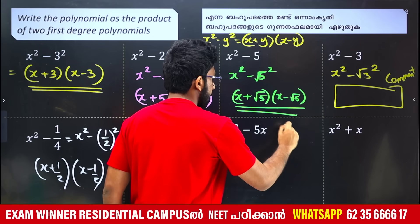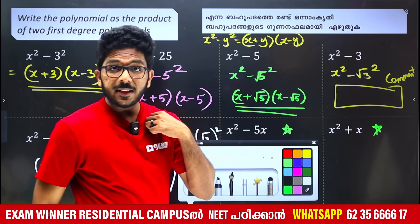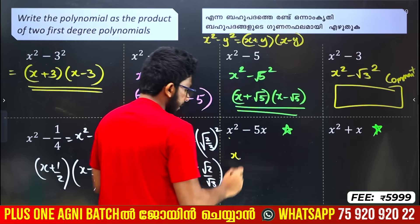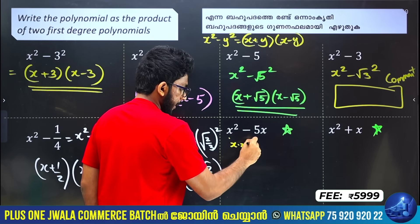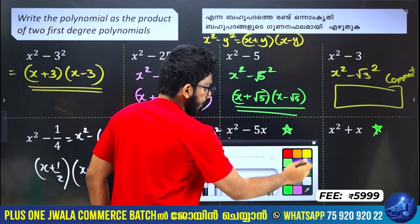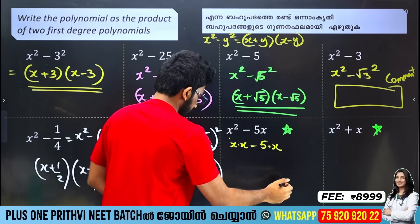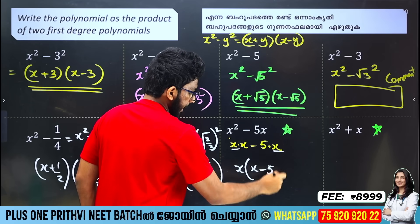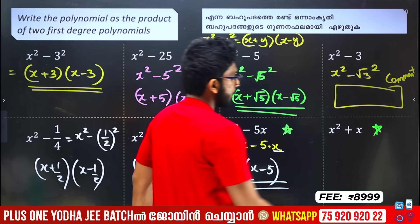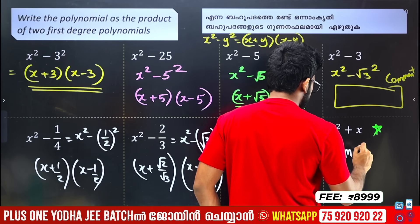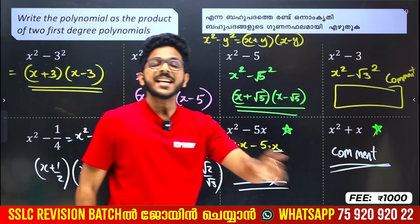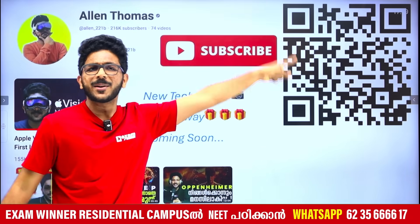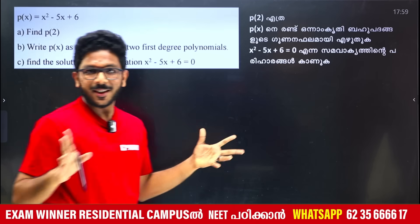These two questions are very important — you can't skip them. In a second degree polynomial, we have two first-degree factors. For x² minus 5x, we take x common: x into x minus 5. This is one first-degree factor times another. Subscribe to the channel and stay tuned if you have questions about science and tech.